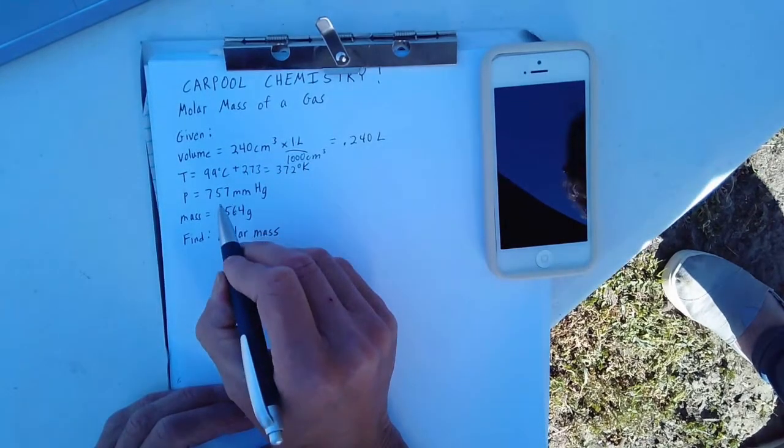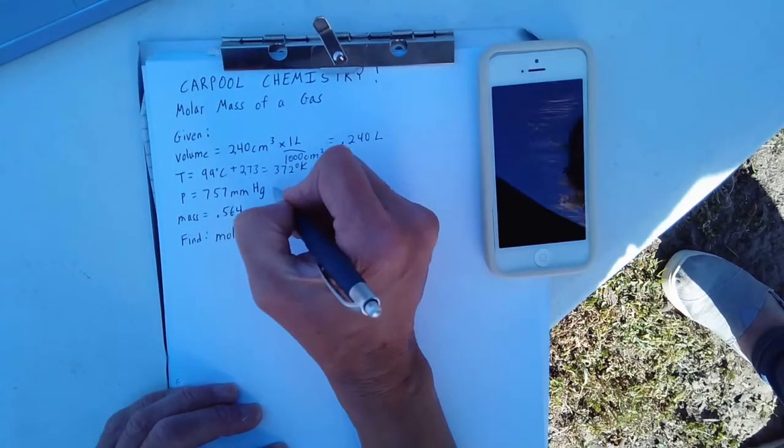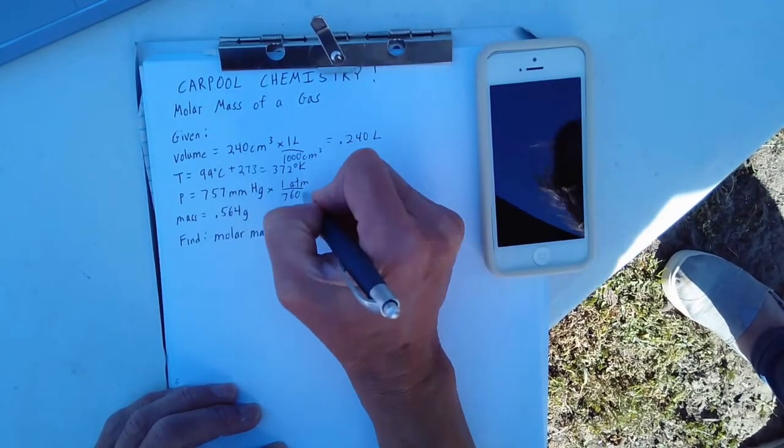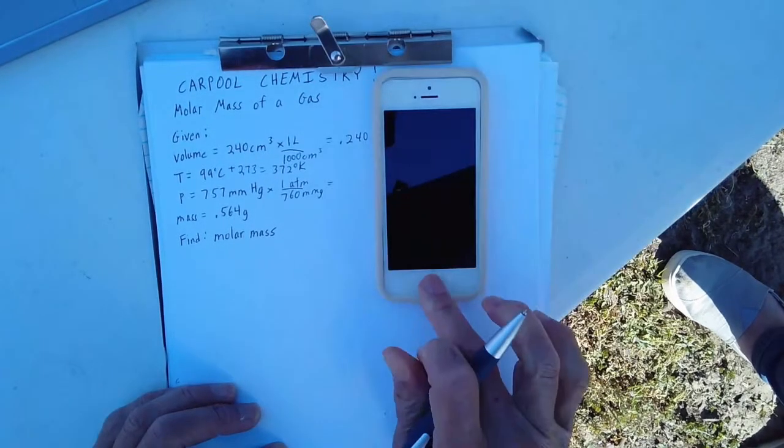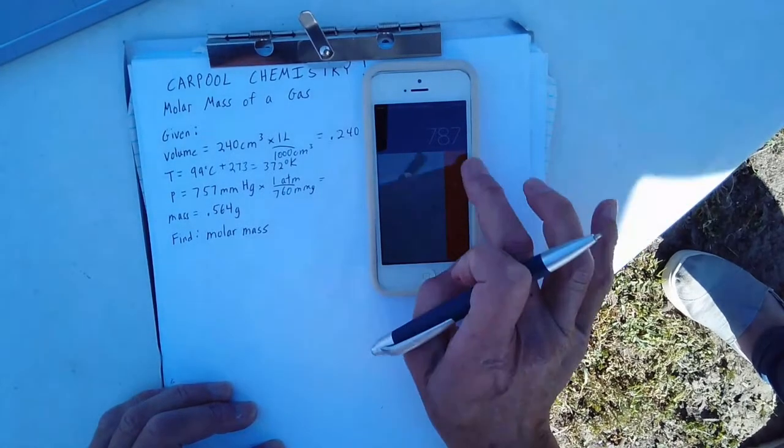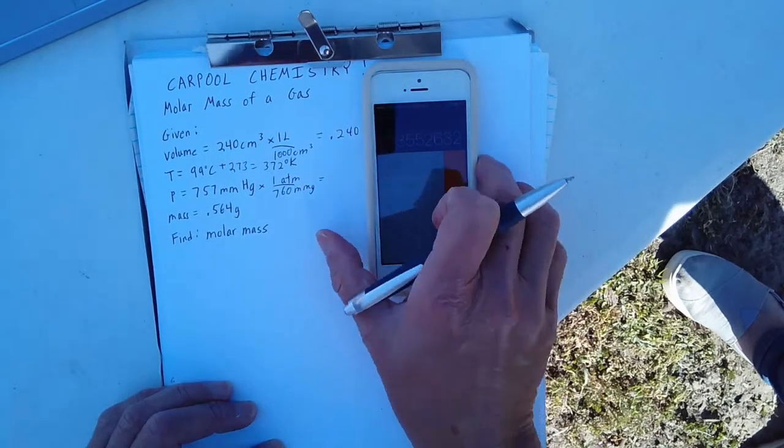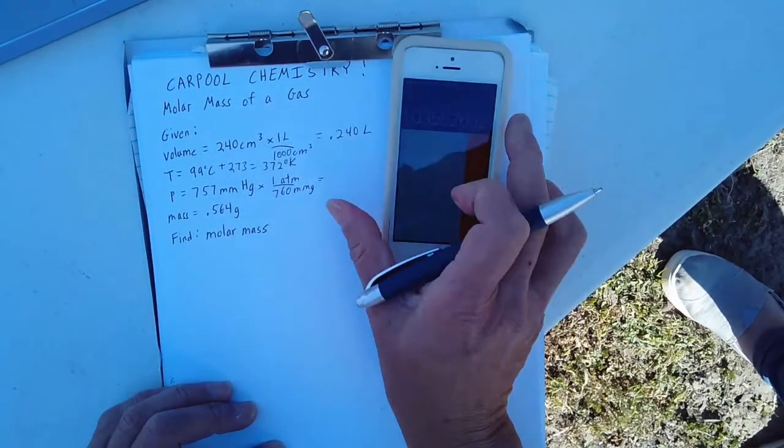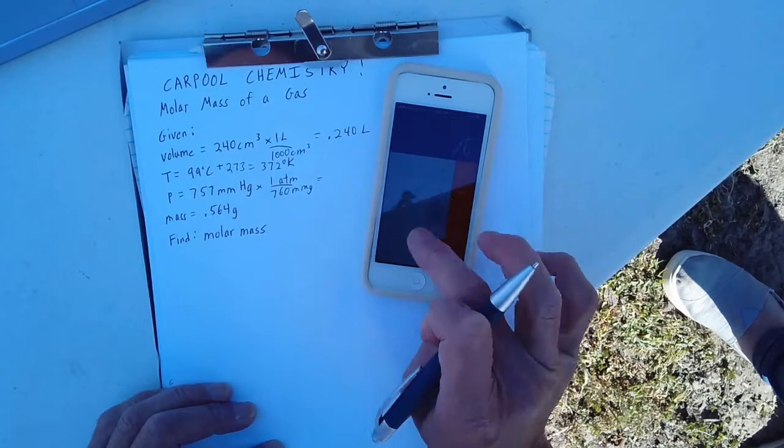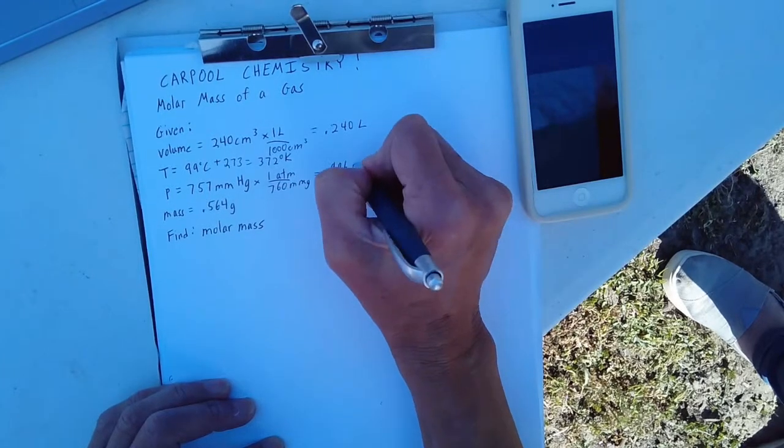Our pressure is 757 millimeters of mercury, and we know that we really want our pressure in atmospheres, so we multiply by one atmosphere for every 760 millimeters of mercury. Calculating that, we come up with 757 divided by 760 is equal to 1.0035. Let's redo that. 757 divided by 760 is equal to 0.996 atmospheres.